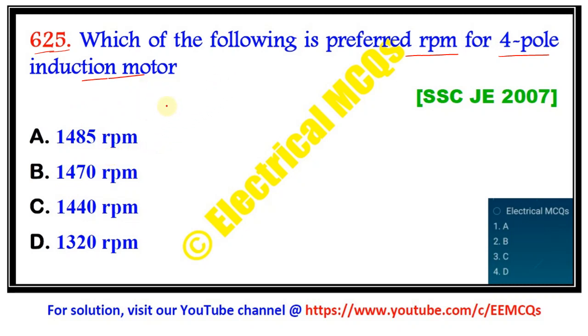What we know: the synchronous speed for a four-pole induction motor is given as Ns equals 120 f by P, where f is the frequency of operation, which is generally taken as 50 hertz in India, and P is the number of poles that is equal to 4.